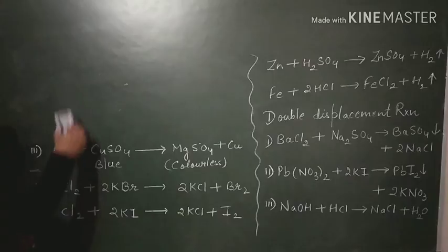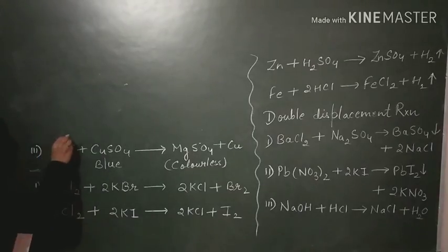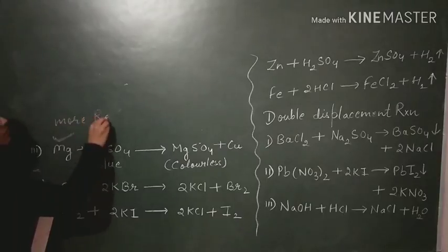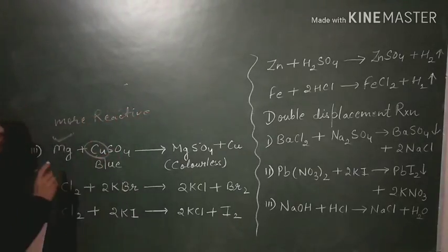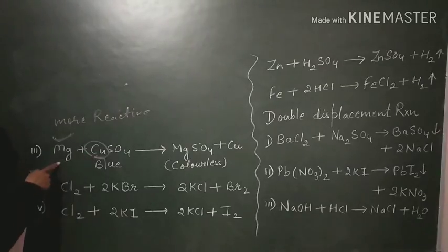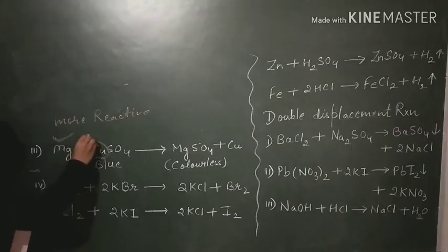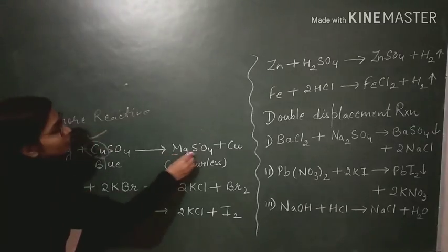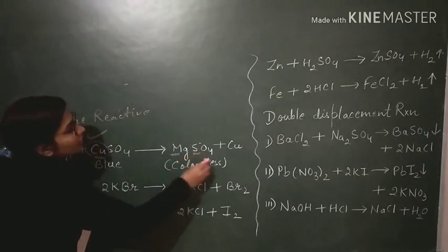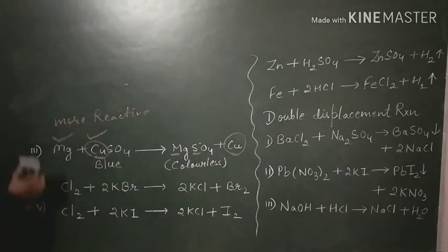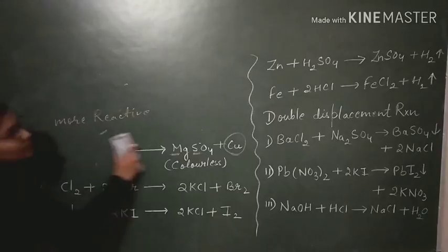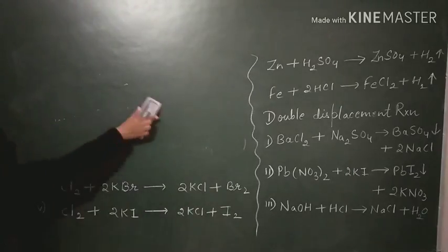Next, magnesium reacts with copper sulfate. Magnesium is more reactive than copper, so it will displace copper. Magnesium takes copper's place in the compound and copper is left alone, forming magnesium sulfate (MgSO4) and copper. This is how displacement reaction takes place with metals — a more reactive metal displaces a less reactive metal.